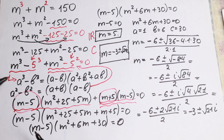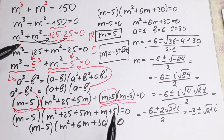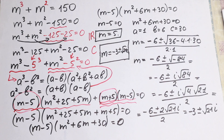I hope you understand this explanation. We can easily check the real root: 5³ plus 5² equals 125 plus 25 equals 150, which is correct. If you still have any questions, write your question in the comments — maybe you have another method, and it will be really interesting to read. Thank you so much for watching and subscribing, and see you in the next videos.